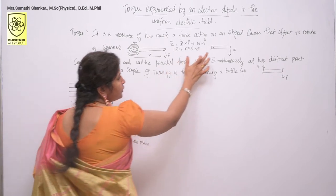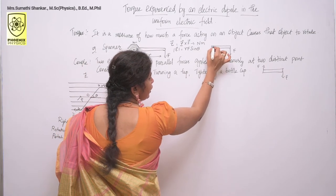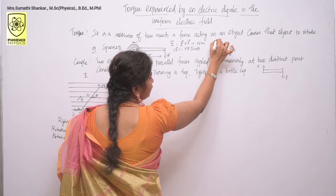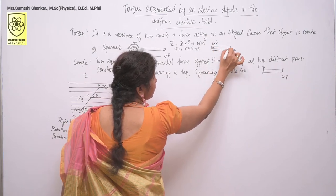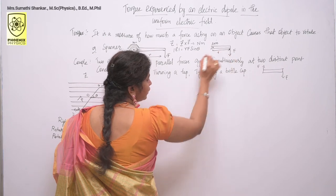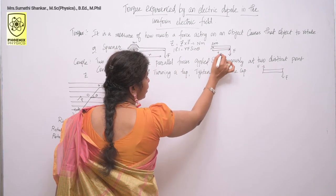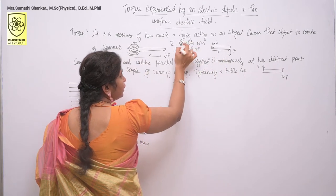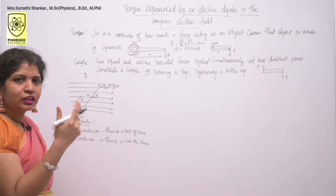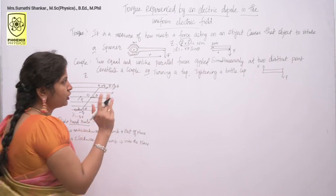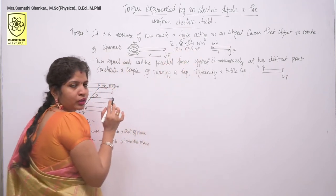Look at this diagram — you can understand better. Here this is the R axis. From this point to this end, the distance is R. Here the force is F, so it is nothing but R cross F. You can say it is a cross product or vector product — both are the same. So tau is equal to R cross F.